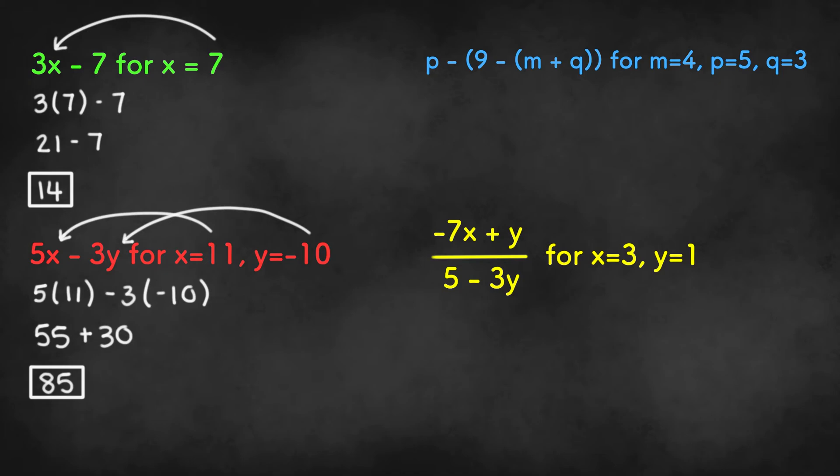In the third example, we have 3 variables. We need to plug in 4 for m, 5 for p, and 3 for q to get 5 minus 9 minus 4 plus 3.